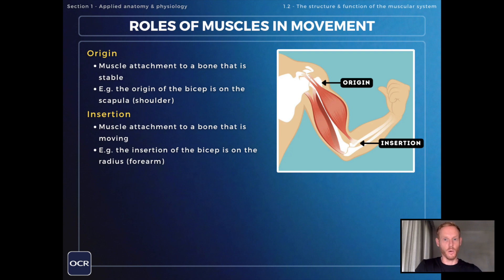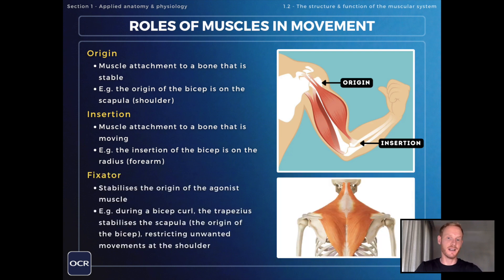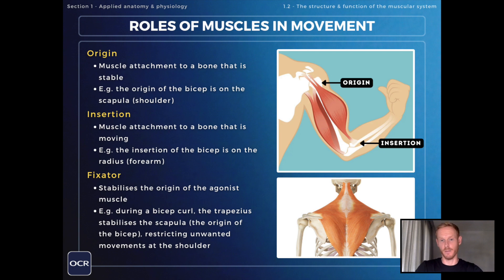In the example of a bicep curl, the insertion would be at the elbow joint — specifically the radius bone in the forearm — whereas the origin would be at the shoulder. With this in mind, a fixator muscle is one that stabilises the origin of the agonist muscle. During a bicep curl, the trapezius muscle stabilises the origin of the biceps — the scapula — which restricts any unwanted movements at the shoulder joint and ensures that as the bicep contracts, it creates flexion at the elbow and not movements at the shoulder.